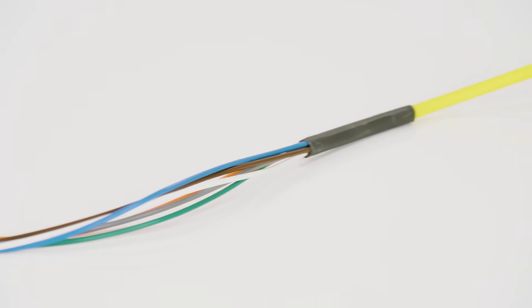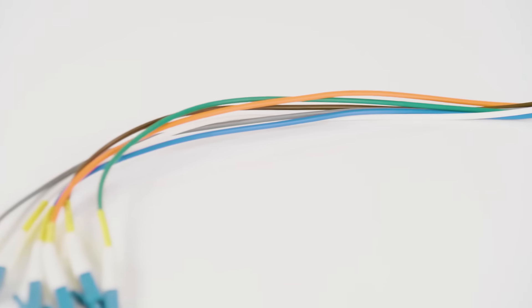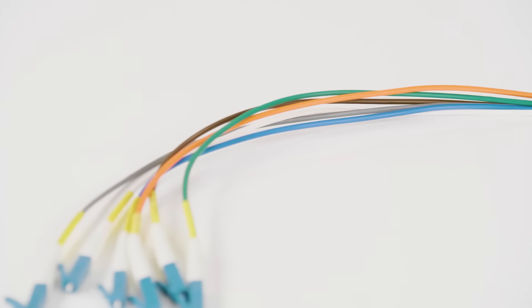2mm furcation tubing on each strand for added strength and protection. All the strands are held together by glue set and heat shrink tubing for extra durability.